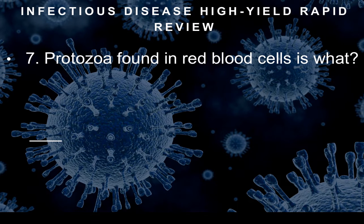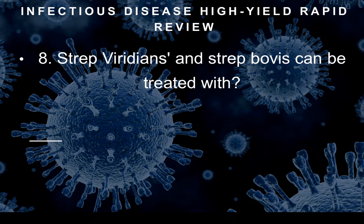Question seven: If the question states that protozoa is found in the red blood cells, this is indicative of malaria. They'll list different diseases and malaria is the correct answer. Question eight: Strep viridans and strep bovis can be treated with what? The treatment is penicillin G — penicillin G for strep viridans and strep bovis.